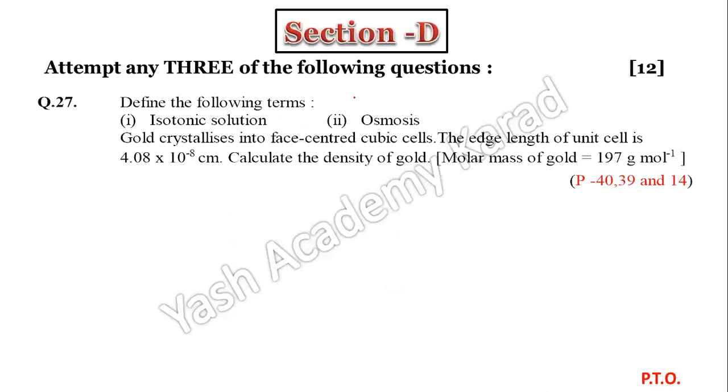This is Section D. Attempt any three of the following questions, total 12 marks. Question number 27: Define the following terms - isotonic solution and osmosis.